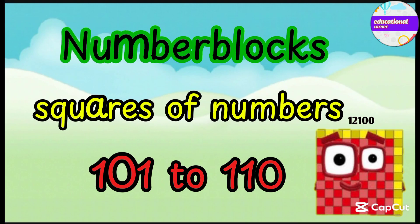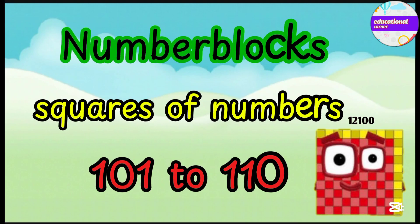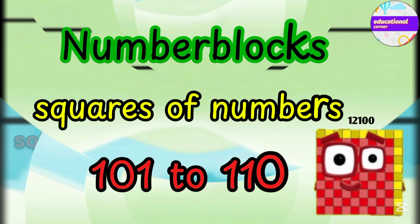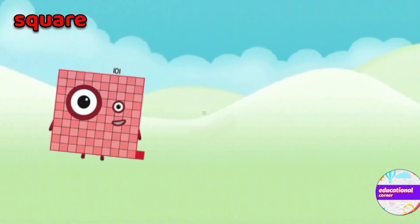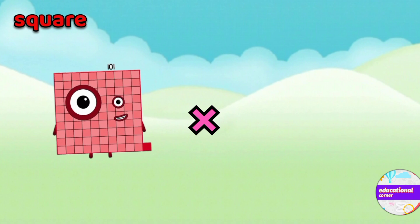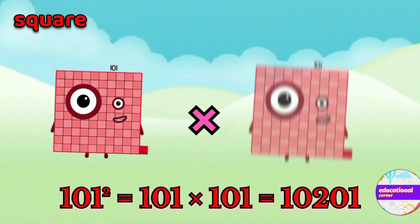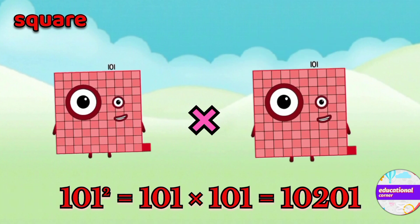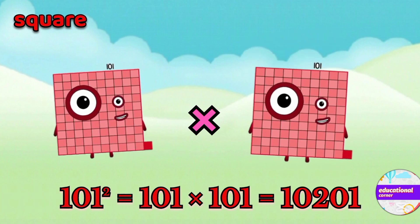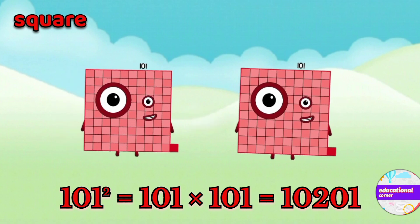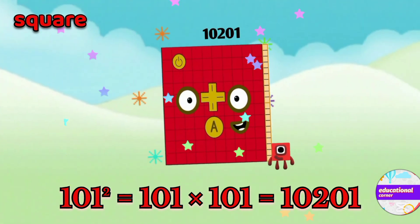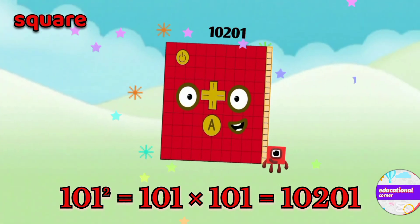Number blocks: square of 101 to 110. 101 multiply by 101, so the square of 101 is ten thousand two hundred and one.